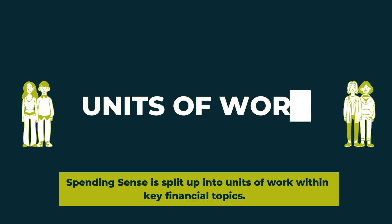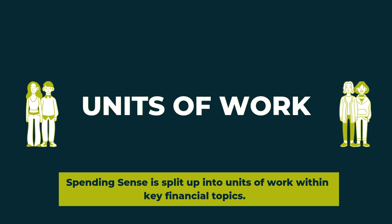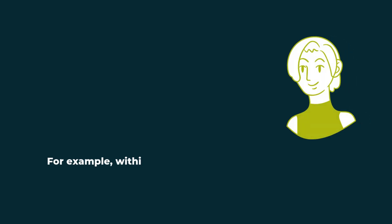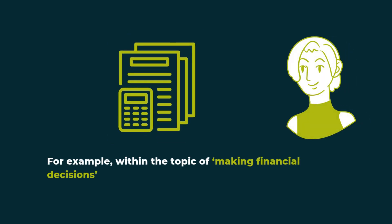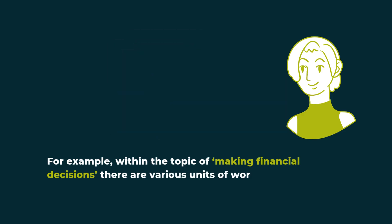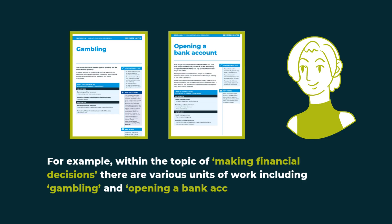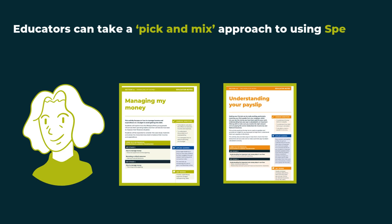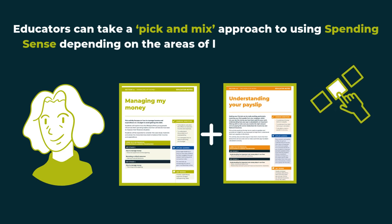Spending Sense is split up into units of work within key financial topics. For example, within the topic of making financial decisions there are various units of work including gambling and opening a bank account. Educators can take a pick and mix approach to using Spending Sense depending on the areas of learning you wish to cover.